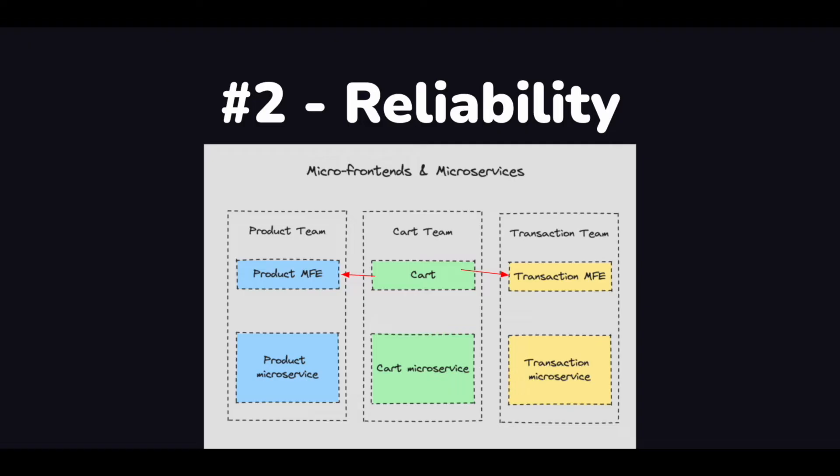The second reason is reliability. If one microfrontend service fails, it will not affect the entire application. For example, if the cart team relies on the product team using some functions or components inside the product MFE, as well as the transaction MFE, and one of those services breaks, it will not cause the entire application to fail — there will be fallbacks, but the rest of the app stays up.